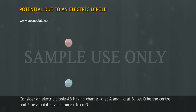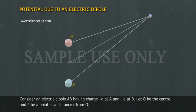Potential due to an electric dipole. Consider an electric dipole AB having charge minus Q at A and plus Q at B. Let O be the center and P be a point at a distance R from O.